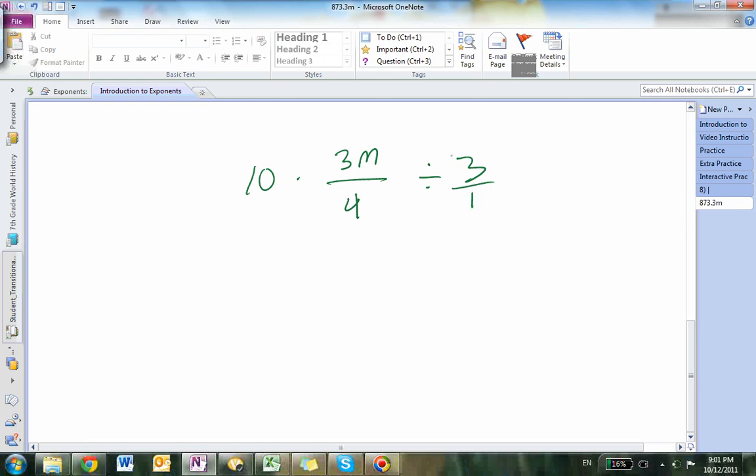But then you want to change division into multiplication, which also means you have to multiply by the reciprocal of this number. Just like in addition, you have to add the opposite. So it would be 3m/4 times 1/3.